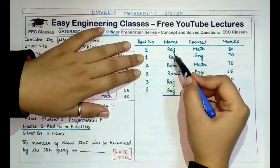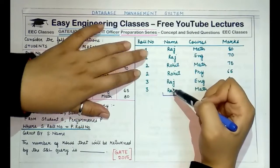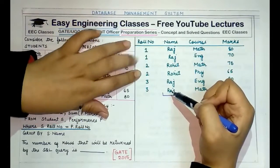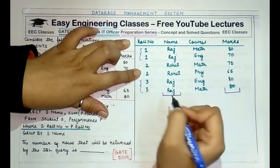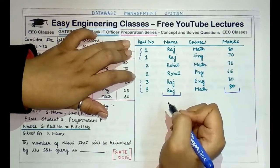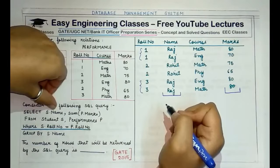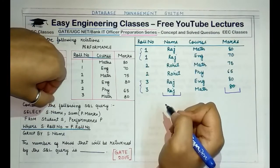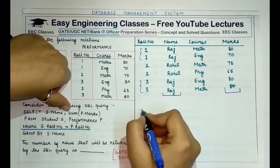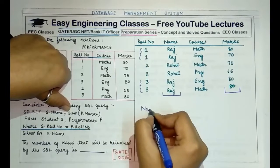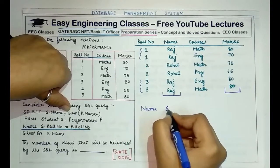There are only two distinct names: Raj and Rohit. Even though the two rows named Raj belong to different persons with different role numbers, since the query does not take role number into account, we select only two names — Raj and Rohit — and sum their marks.